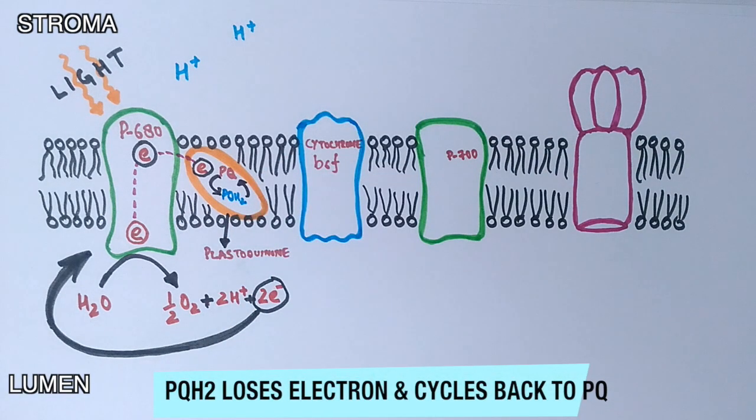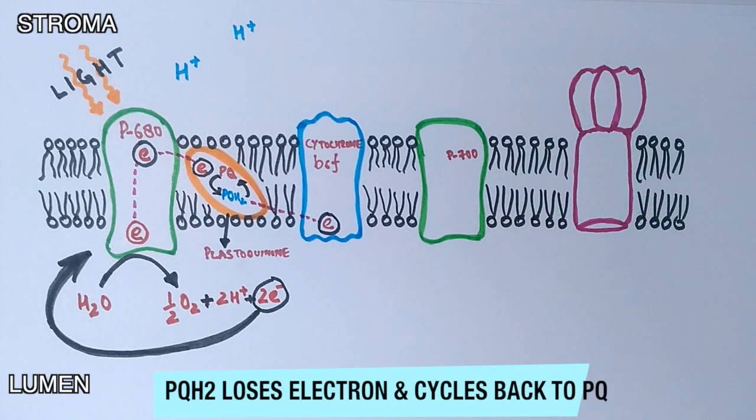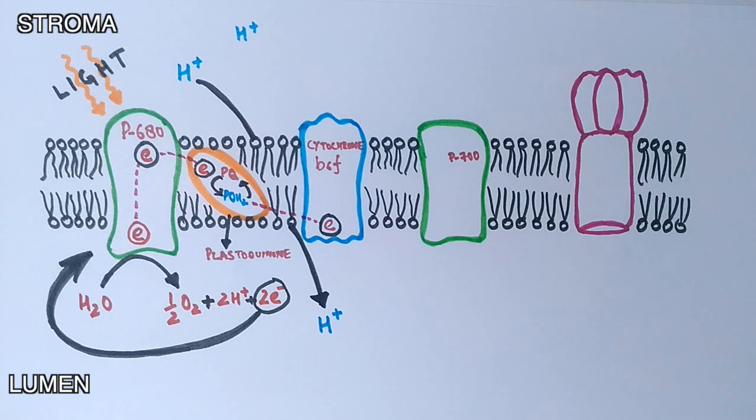But the plastoquinol further delivers the electrons towards the cytochrome B6F complex, which mediates the pumping of protons into the lumen by the energy of excited electrons. Now the electron is again at the lower energy state, as it has lost its energy for pumping protons from stroma into the lumen.